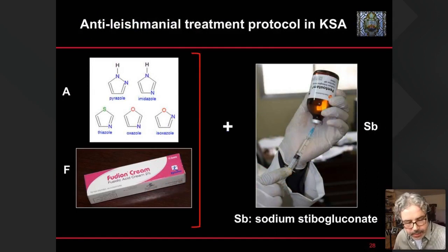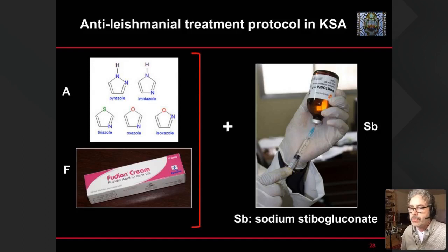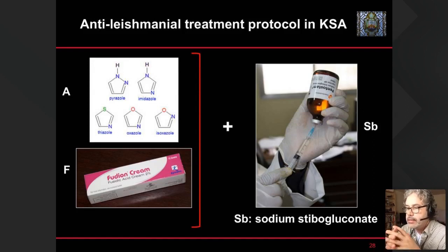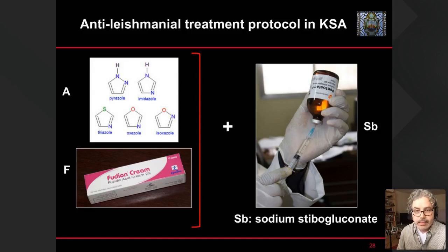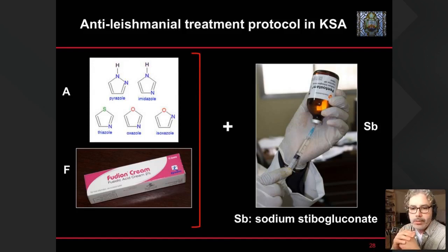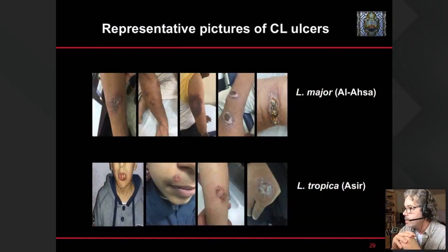The way treatment is administered in the kingdom: doctors typically supply first a combination of azoles — antifungals — because the same lipid pathway affected in fungus is present in Leishmania, so antifungals may also affect Leishmania infection. Topical fusidic acid is also supplied given the tendency for these infections to develop bacterial secondary infections. Depending on the patient's response, doctors then assess whether to supply antimonials.